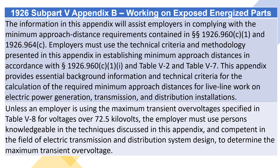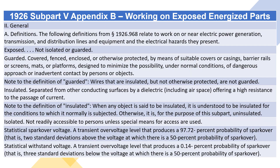Unless an employer is using the maximum transient overvoltages specified in Table V-8 for voltages over 72.5 kilovolts, the employer must use persons knowledgeable in the techniques discussed in this appendix, and competent in the field of electric transmission and distribution system design, to determine the maximum transient overvoltage. The following definitions from Section 1926.968 relate to work on or near electric power generation, transmission, and distribution lines and equipment and the electrical hazards they present.